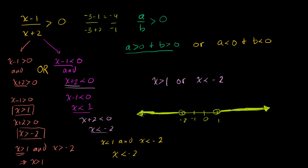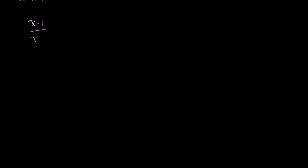I told you I'd show two ways of doing this problem, so let me show another way if you found the first a little confusing. Let me rewrite the problem: x minus 1 over x plus 2 is greater than 0. We'll keep it as strictly greater than — maybe in the next video I'll do the greater than or equal case to incrementally step up the difficulty.